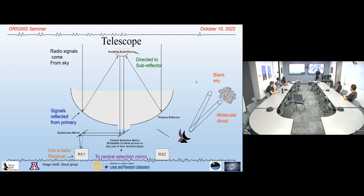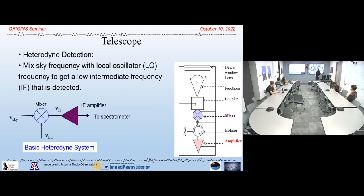How do we know what we're actually looking at? If we know where the source is, we look at the source — what we see is a column through the sky. We also look at a blank position where our source isn't. We observe on the on and off position, subtract the two spectra, and that is our source signal. We take the sky frequency, mix it with the local oscillator frequency to get a low intermediate frequency which we can amplify for better detection. This is heterodyne receiving.